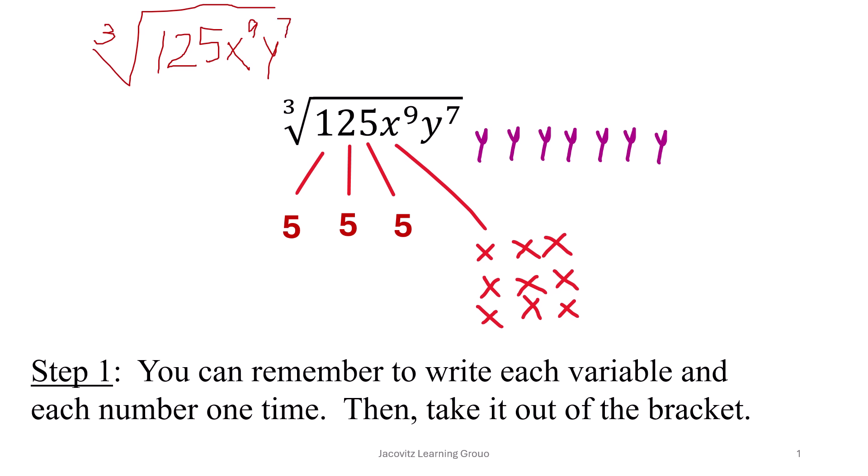Step 1 says you can write each variable and each number out one time. It's like 5 times 5 is 25, and because you have a cubed root which means 3, you have one here, a second one here, and a third one here.